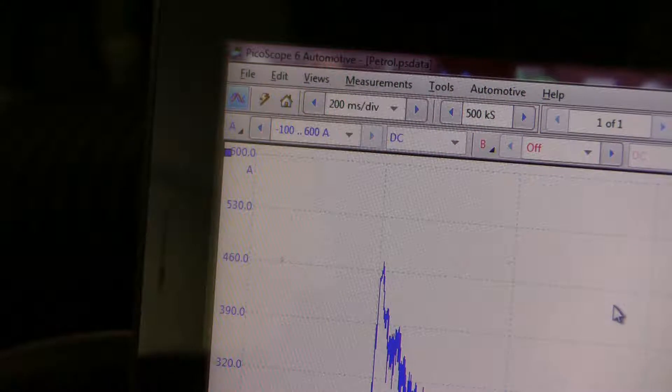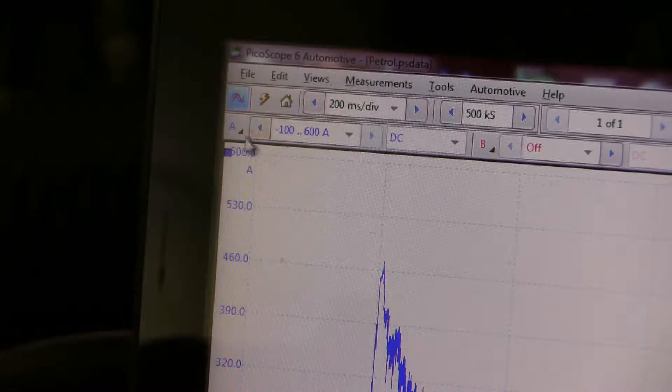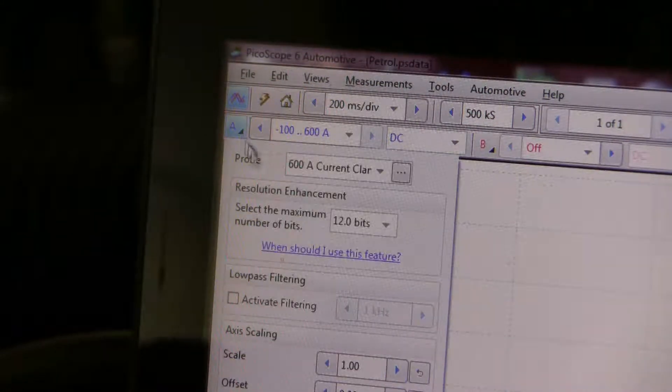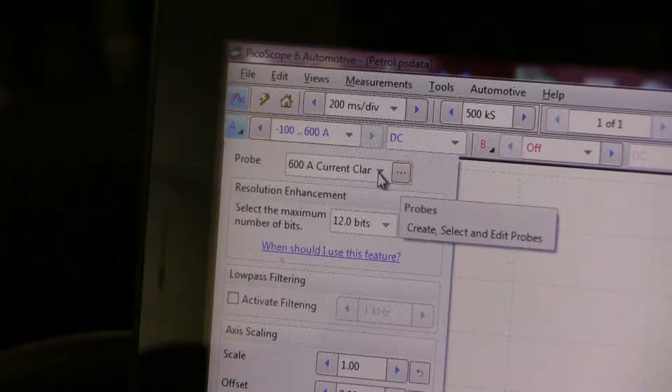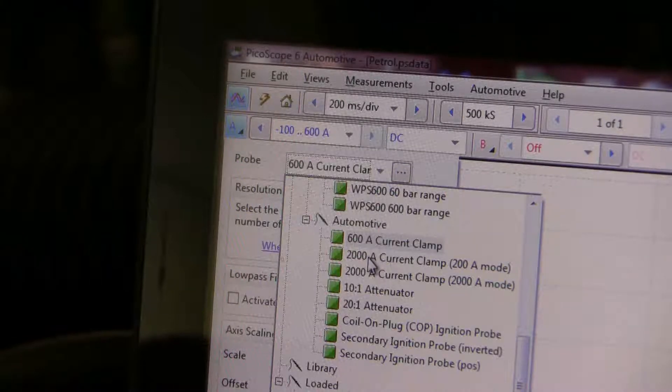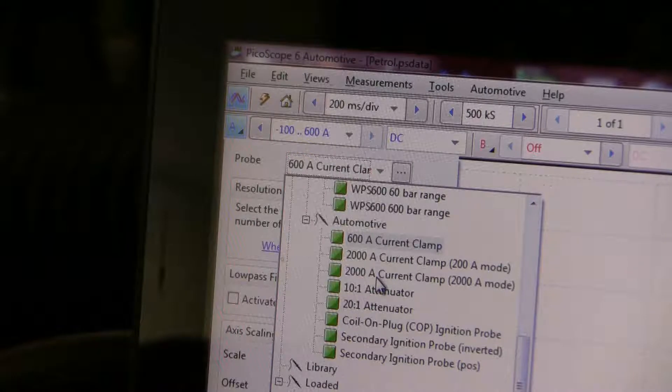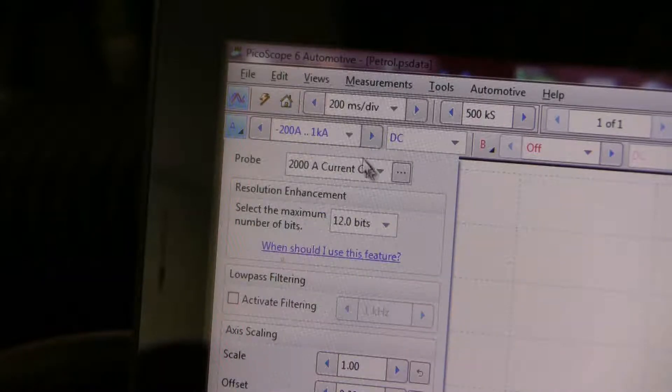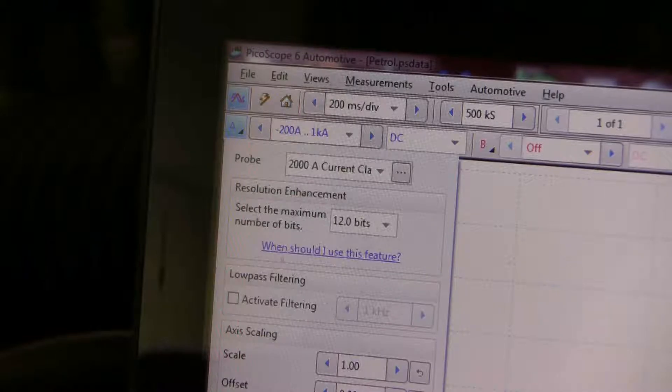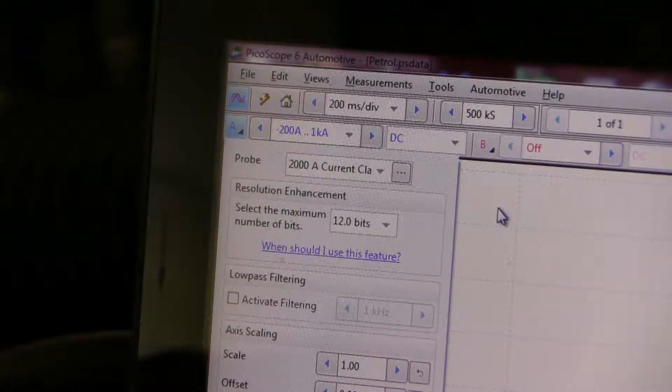We're back at the screen and now we need to tell the software what probe we're using. It's not the 600 amp current clamp, it's the 2000. So we'll go down here and I've got it set at 2000 amp mode there. If we're using a 10 to 1 attenuator, you click that in as well. So now we've told it what we're using for that channel.